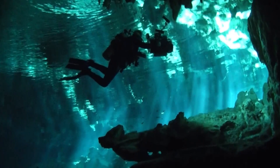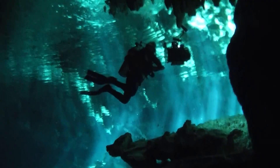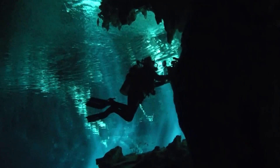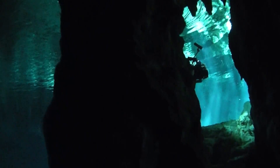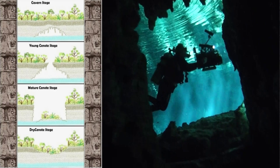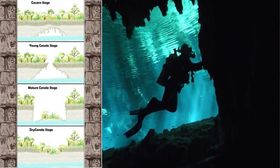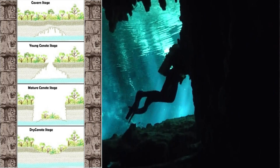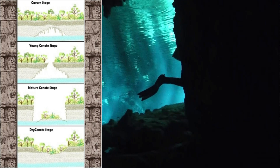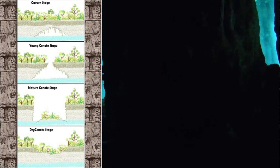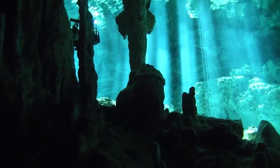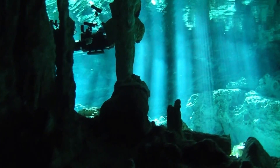The formation process consists of three phases: dissolution, collapse, and construction. Cenotes are formed by dissolution of rock and the resulting subsurface void, which may or may not be linked to an active cave system, and the subsequent structural collapse of the rock ceiling above the void. Rock that falls into the water below is slowly removed by further dissolution, creating space for more collapsed blocks.